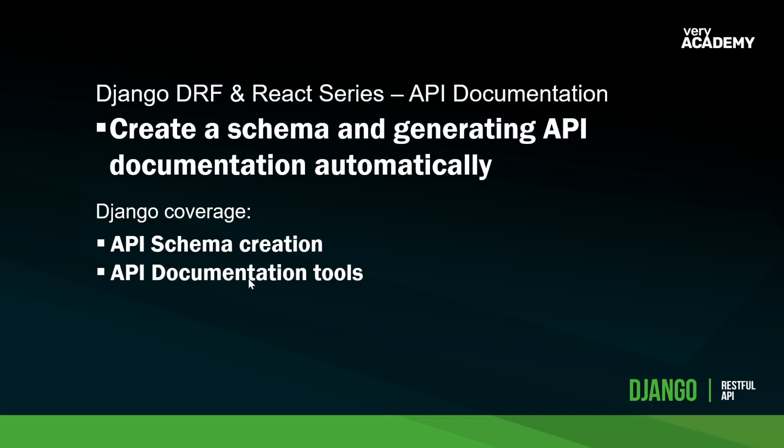So if you're just making a small project with a front end and a back end, this can also be useful to help you understand and remind yourself what you need to develop in the front end and how it can interact with your RESTful API. We're going to create a schema, give you a general overview of what a schema is, and then automatically generate API documentation. We'll have a look at different tools available and use the tool already available in our DRF package.